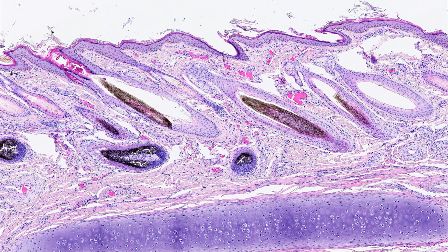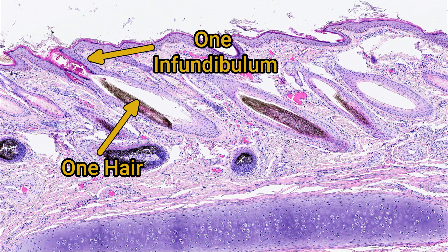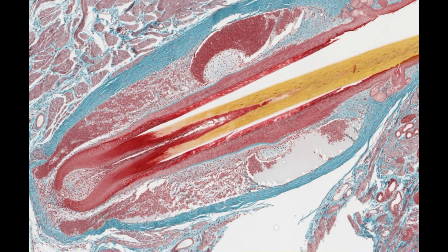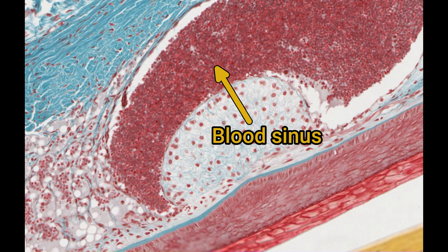Another species difference is the number of hair follicles per infundibulum. Herbivores and omnivores tend to have simple hair follicles, where one hair shaft exits one infundibulum. However, carnivores and rabbits have compound hair follicles, where many hair shafts exit from a single infundibulum. Animals also have special sensory hair follicles called vibrissae, or whiskers — large hairs surrounded by a blood sinus.